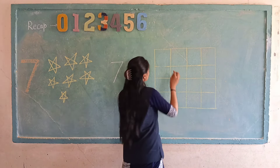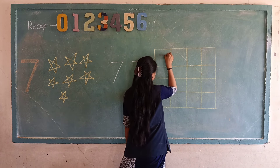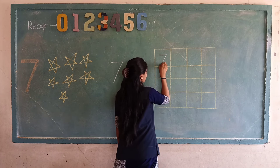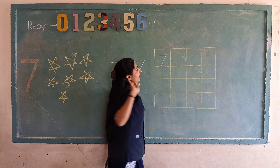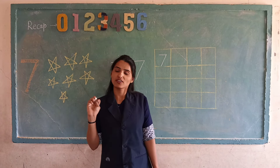Repeat with me. Slipping line, slanting line. Understand? Okay, practice in your copy.